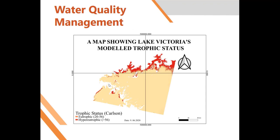This was actually my undergraduate thesis at university. I was using remote sensing to develop a model that measures the amount of algae concentration on Lake Victoria. As you can see, this was one of my outputs — a map showing Lake Victoria's trophic status, where the highlighted areas were highly polluted waters and others were atrophic waters. That is one application of remote sensing.